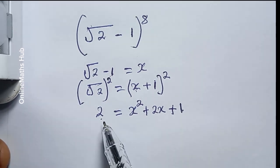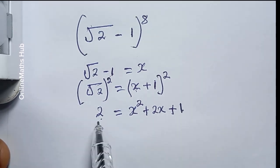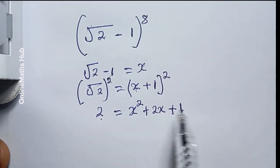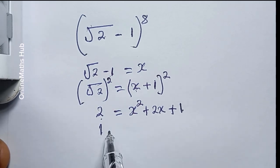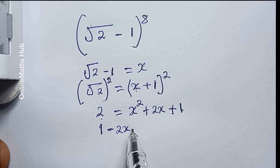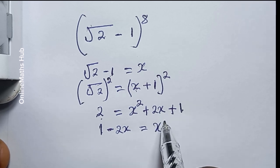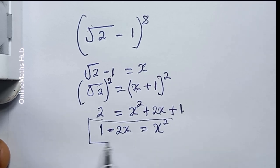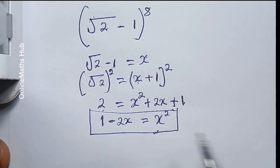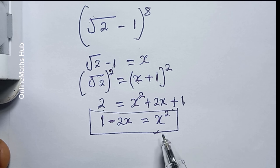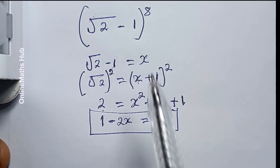And then finally 1 multiplied by itself is equal to 1. So I'll move 1 to the left-hand side, giving 2 minus 1 which is 1, and then bring the 2x to the left-hand side so I have minus 2x, giving x squared equals 1 minus 2x.